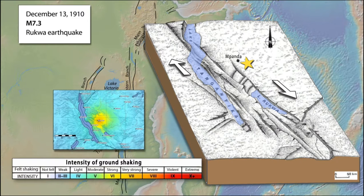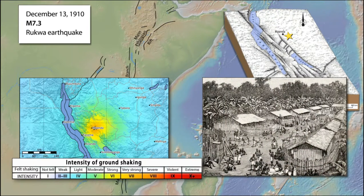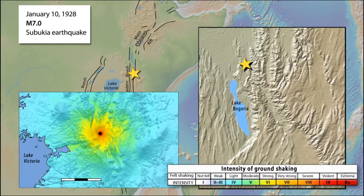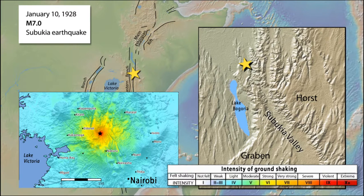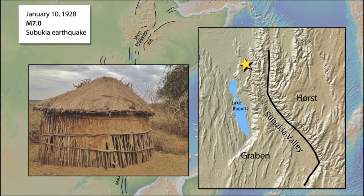Despite very strong ground shaking in the epicentral area, this magnitude 7.3 earthquake caused little damage to the homes used by indigenous peoples and no loss of life. However, many European masonry buildings were severely damaged or destroyed. On January 10, 1928, a magnitude 7 earthquake initiated at eight kilometers depth beneath the Tsubukia Valley of the eastern branch. Surface rupture with vertical offset reaching 2.4 meters occurred over a distance of 38 kilometers along the escarpment forming the east edge of the rift. Because of the sparse population in the epicentral area and the lightweight construction of homes used by indigenous peoples at the time, damage was minimal and no lives were lost.